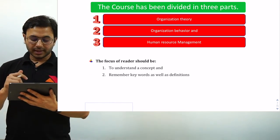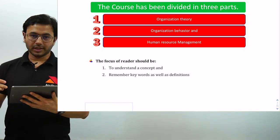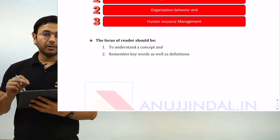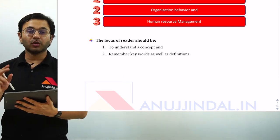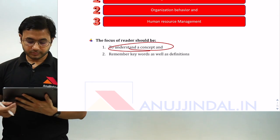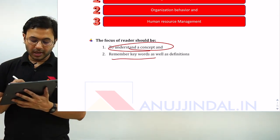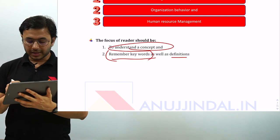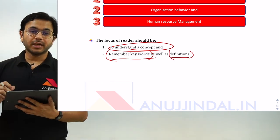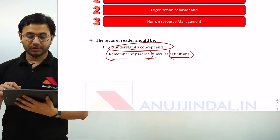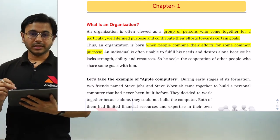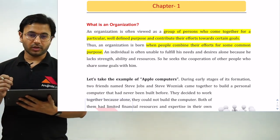The course has been divided into three parts: organization theory, organization behavior, and human resource management. The focus of everything I teach you is going to be on two things: number one, to understand a concept, and number two, to identify and remember keywords as well as definitions, because they are directly or indirectly asked in the examination. So let us start with the first chapter, which talks about what exactly is an organization.